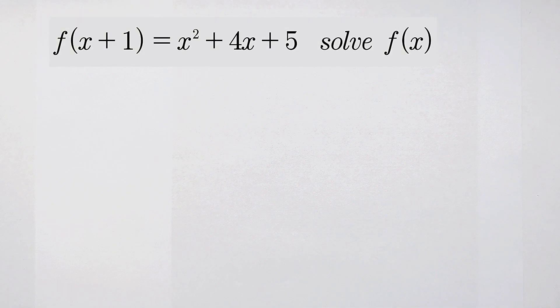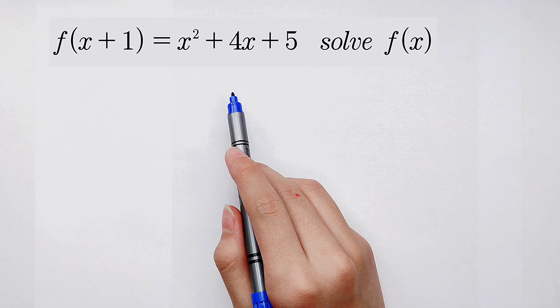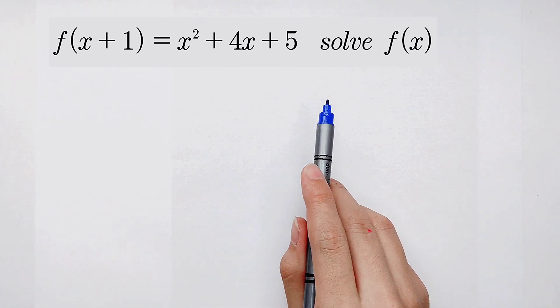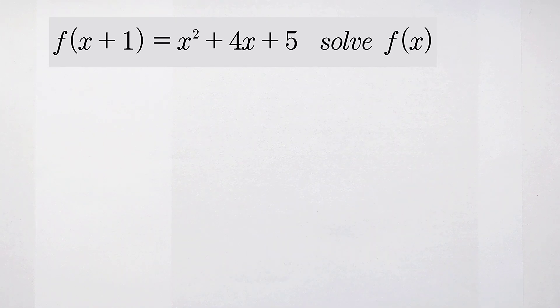Welcome to Math Window. Today I'm going to show you this wonderful math problem about function. We've known that f of x plus 1 is equal to x squared plus 4x plus 5. We have to find f of x.